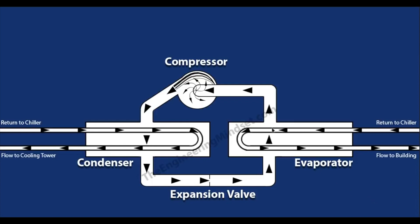Inside the evaporator, the chilled water circuit water is sent up to the AHU to collect unwanted heat from the building. It returns at about 12 degrees, comes back into the chiller, passes through the loop, and by the time it leaves again it needs to be around 6 degrees. The water is held within tubes, keeping it completely isolated from the refrigerant — the two never mix. The water comes in, passes through the tubes, and leaves again; the refrigerant passes through and picks up the heat through the tube walls.